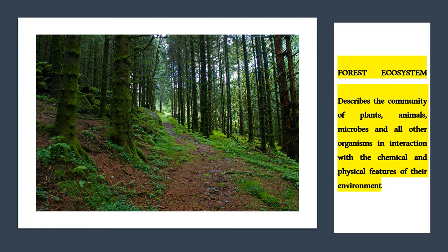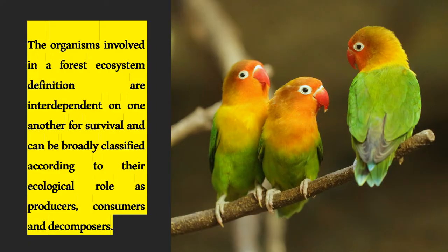One more thing we discussed in our previous video is that there is no perfect ecosystem. No ecosystem can be called perfect because the interdependency is so much — every ecosystem is dependent on another ecosystem, which may be dependent on yet another larger ecosystem. Everything works in coordination. The organisms involved in the forest ecosystem are interdependent on one another for survival and can accordingly be classified into different categories.